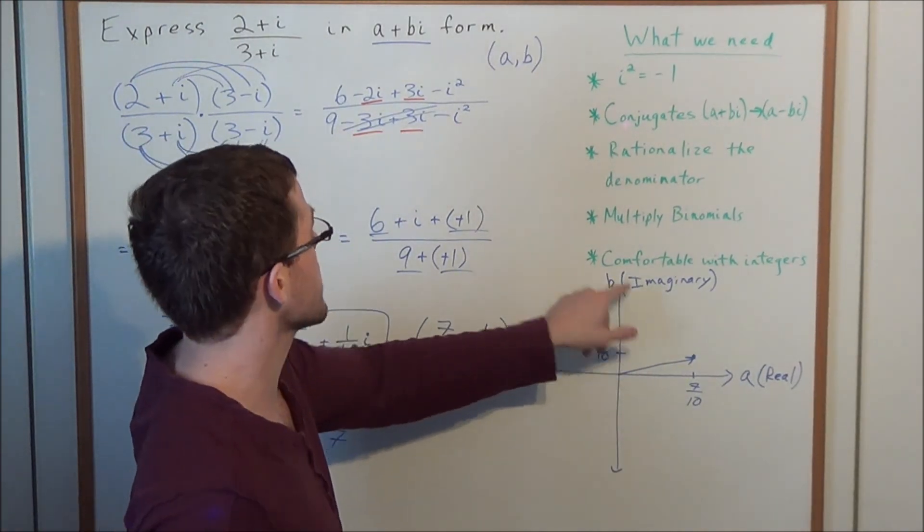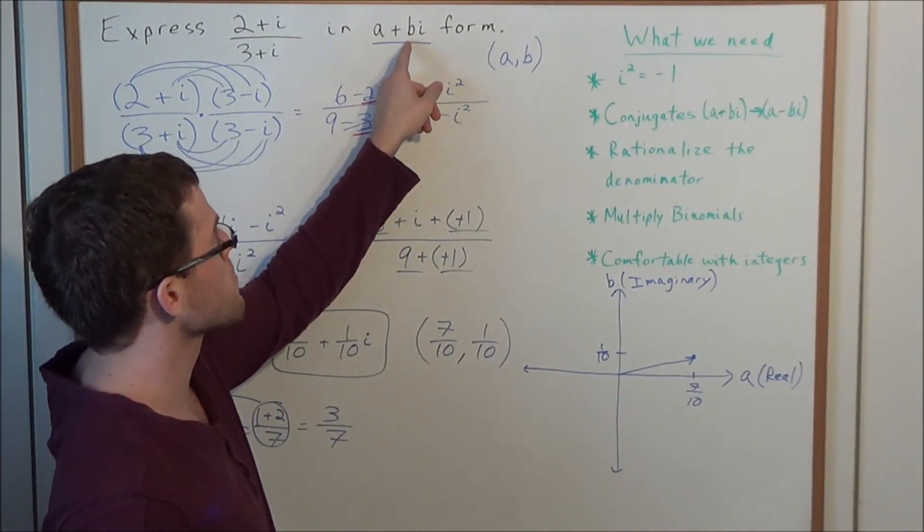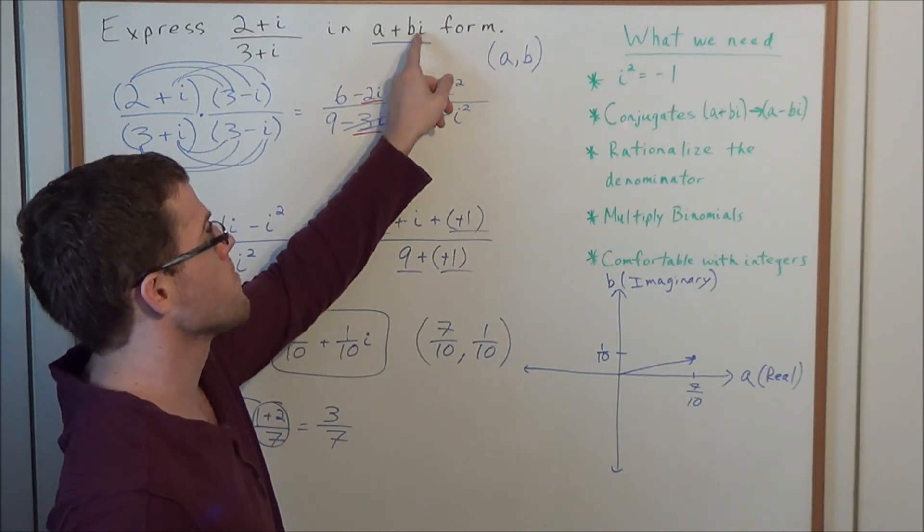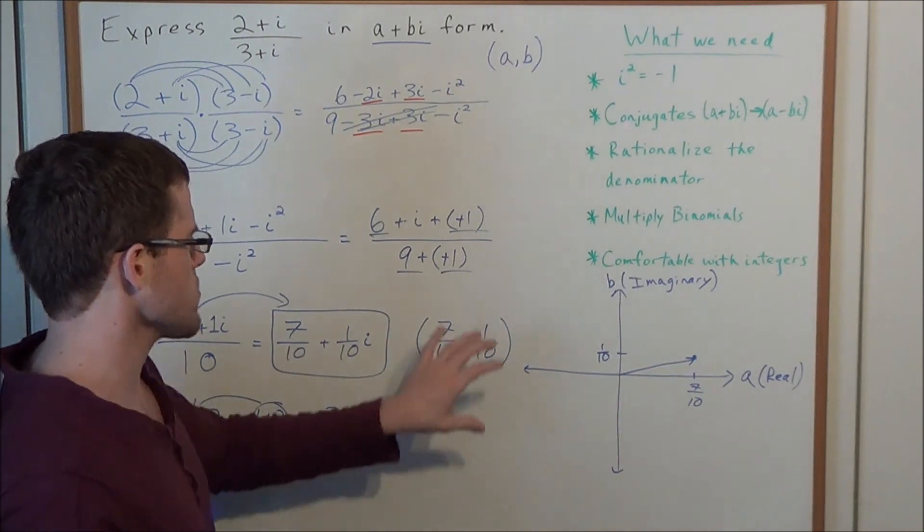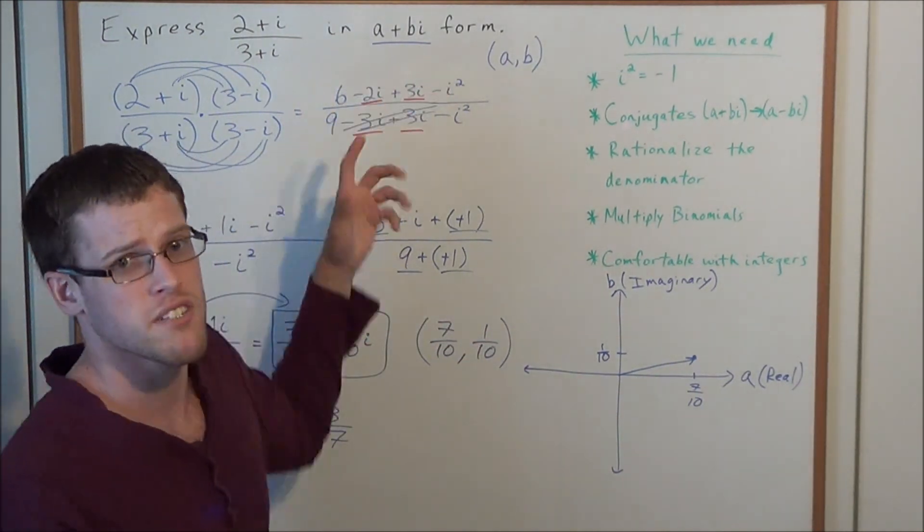And notice how this b, the imaginary part, is the real number in front of the term i. And a is the real number that's isolated and on its own. So this is why we're interested in this a plus bi form.